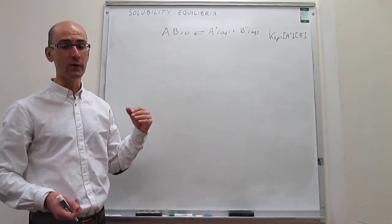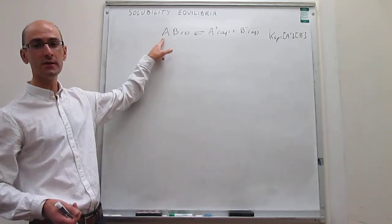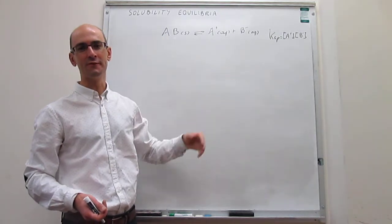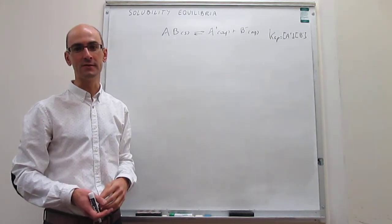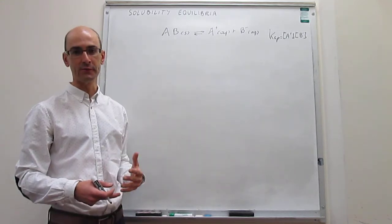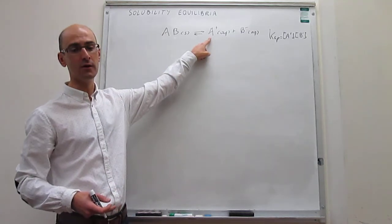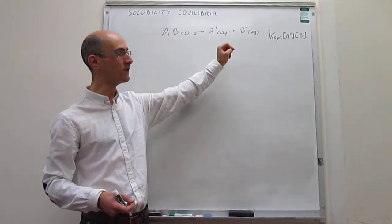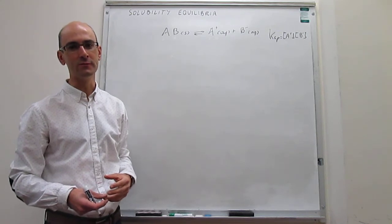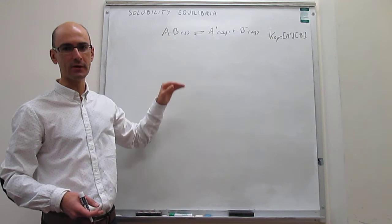However, what we can do is always figure out how much of the solid has dissolved by looking at the concentration of ions in solution. In this particular case, the stoichiometry is pretty straightforward: if you find one mole of A⁺ or one mole of B⁻ in solution, then that means one mole of AB has dissolved.